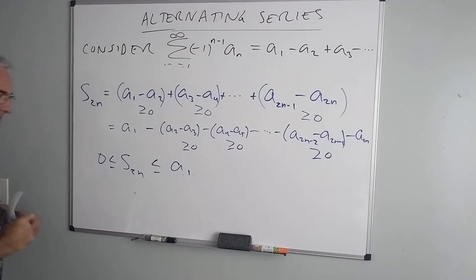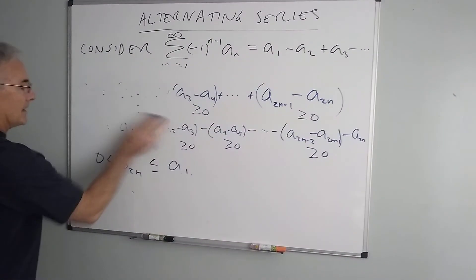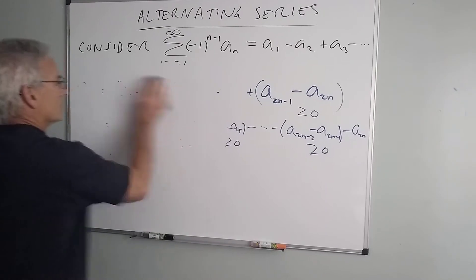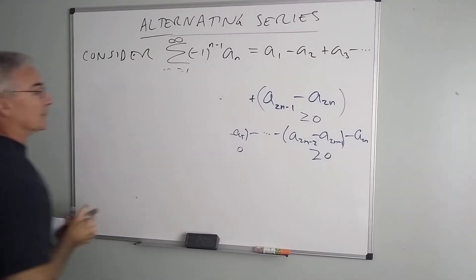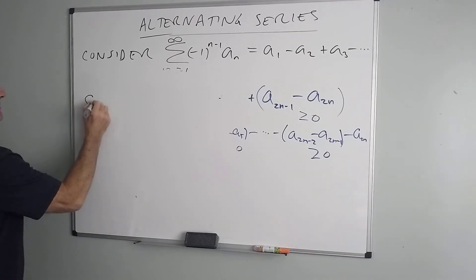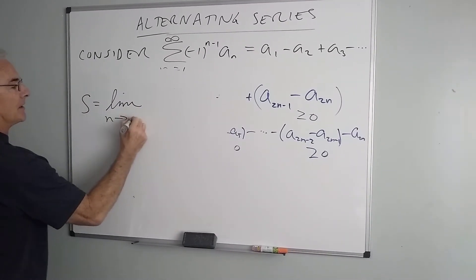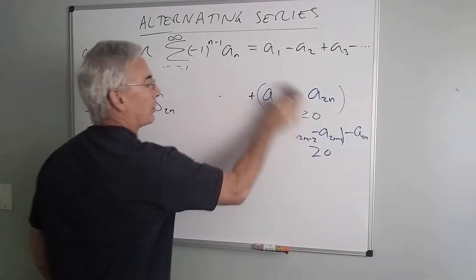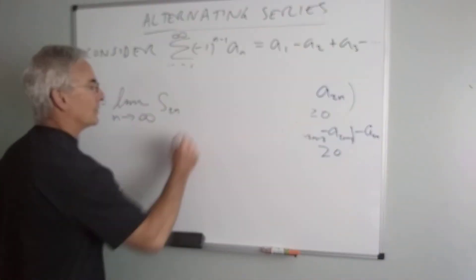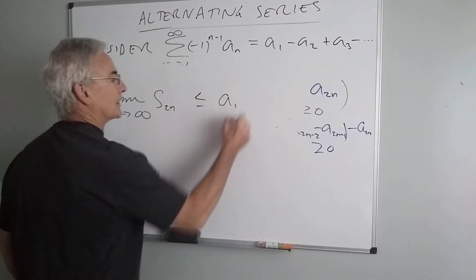So finally, what that means is if I want to take a limit and say what is the infinite sum, we know that s, which is the limit as n goes to infinity of my partial sum, in this case we'll take the even partial sum, we know that this value is less than or equal to a1.